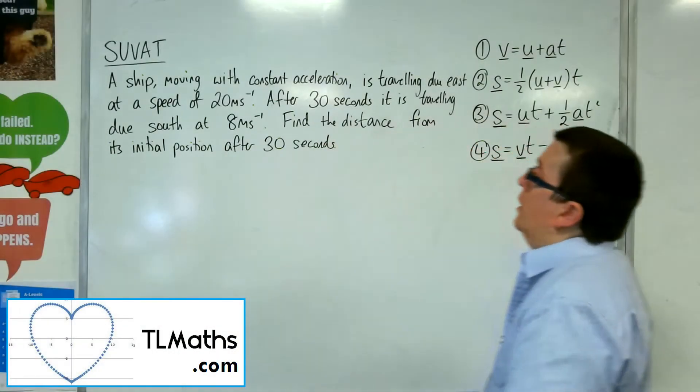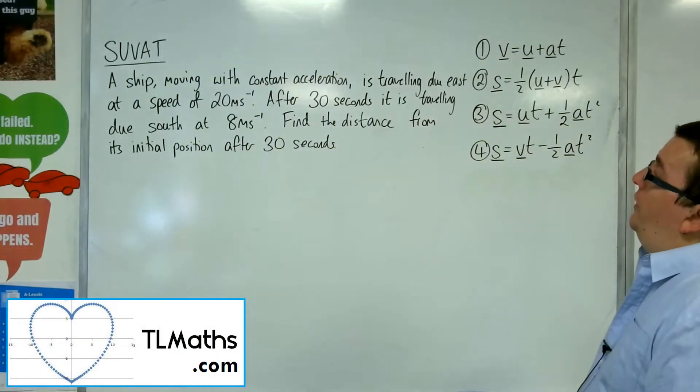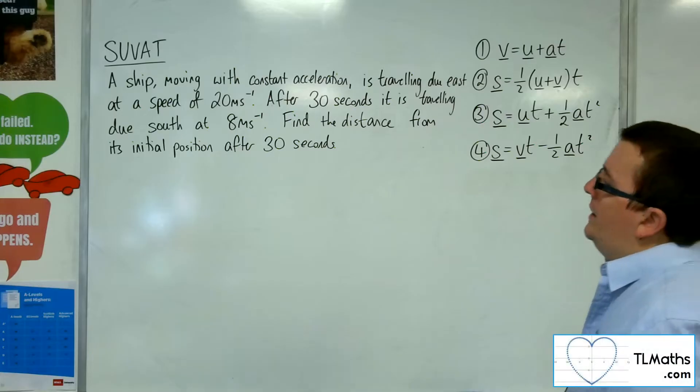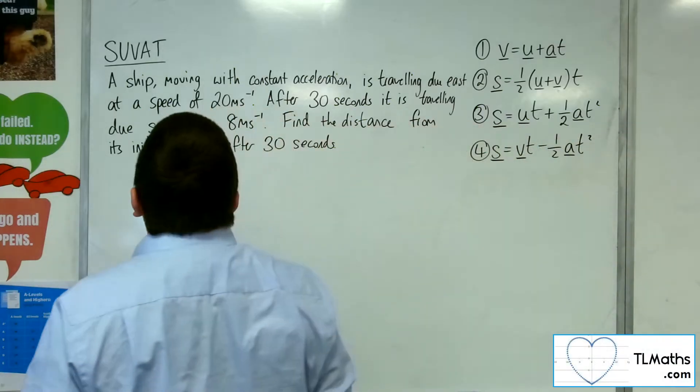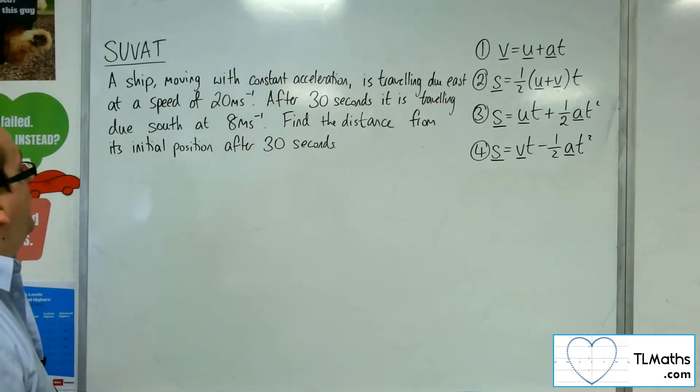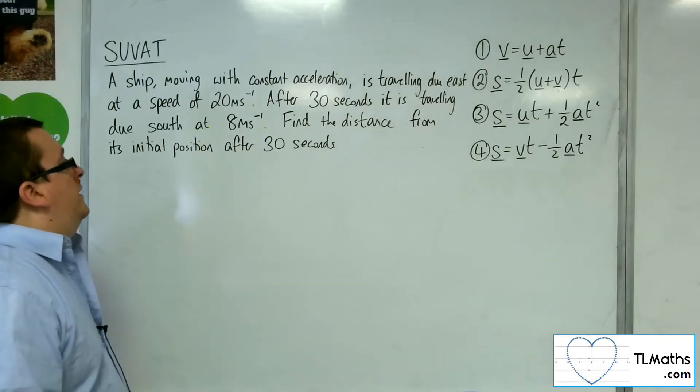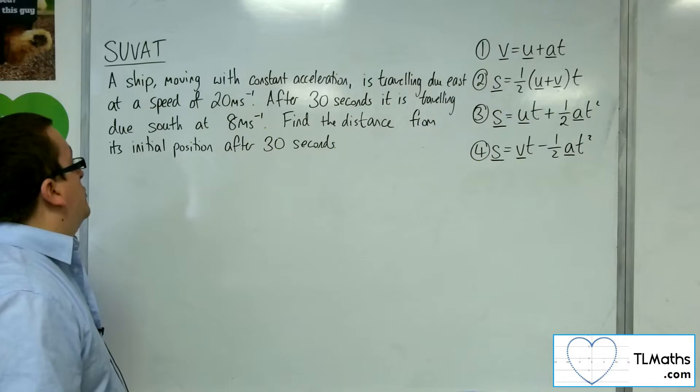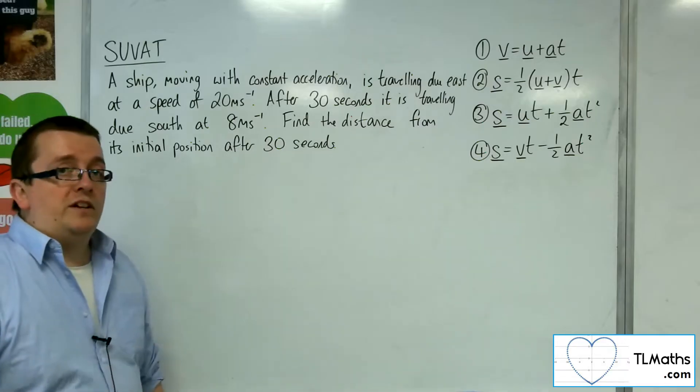In this video, a ship moving with constant acceleration is travelling due east at a speed of 20 meters per second. After 30 seconds, it is travelling due south at 8 meters per second. Find the distance from its initial position after 30 seconds.